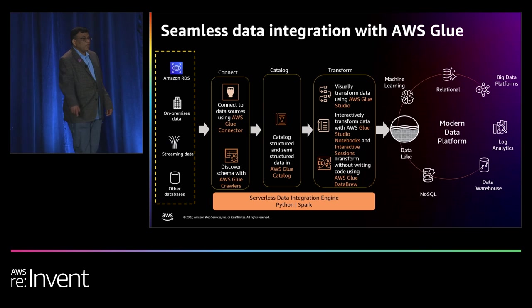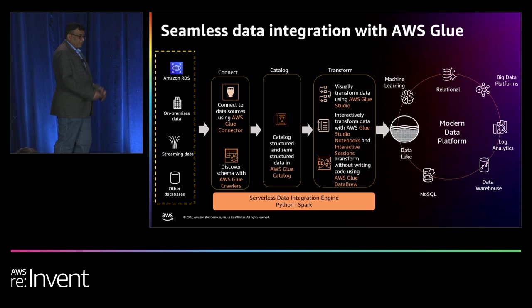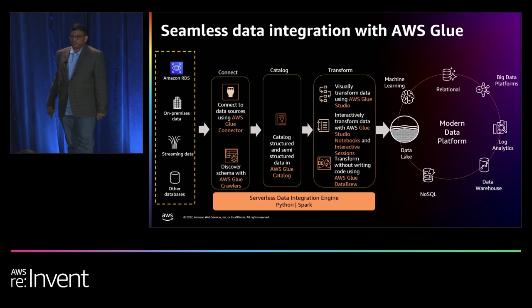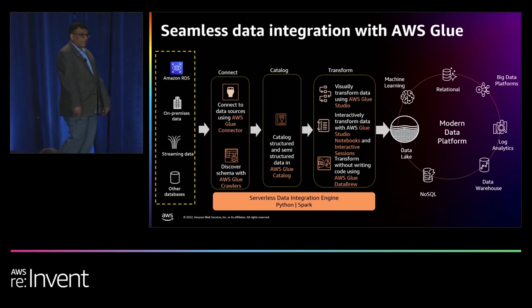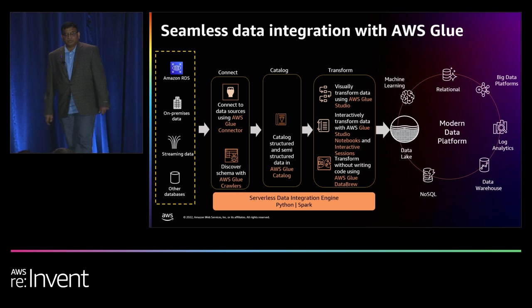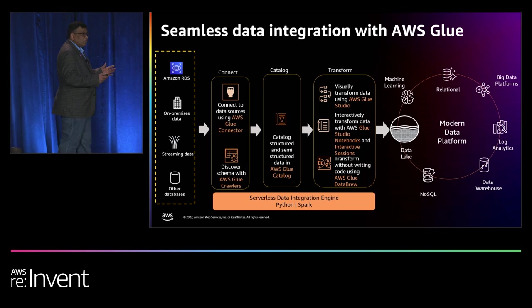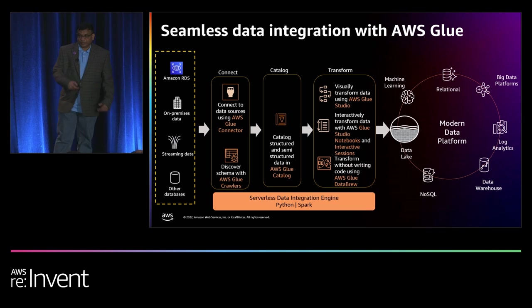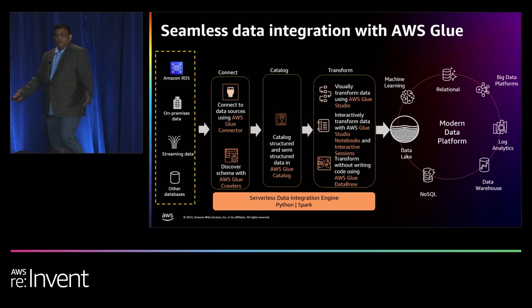Seamless data movement with AWS Glue: with AWS Glue, you can seamlessly move data across many data stores. You can use AWS Glue connectors to connect your data sources and bring data into your storage layer. Once your data is in the storage layer, you can use AWS Glue crawlers to create a data catalog for your data sets. Once the data catalog is available, you can use either AWS Glue Studio, AWS Glue DataBrew, or Glue interactive sessions to process your data. Once your data is transformed, you can move it into your Amazon S3 data lake, a subset into Amazon Redshift data warehouse, or into a NoSQL database like Amazon DynamoDB where your application can consume it.